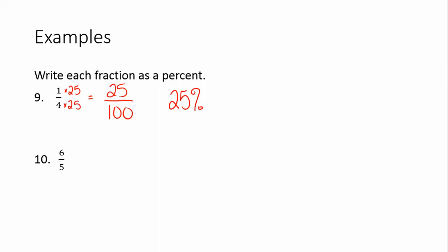Same with 6 over 5. What number do you have to multiply 5 by to get 100? And if you're not sure, you'll have to start checking on a calculator. You can take 100 and divide it by 5. That will give you the number you need to multiply by. But it is 20. So that gives us 120 out of 100. Or 120 percent. So when you're writing fractions as percents, you need to make your denominator 100. Then you also need to multiply your numerator by that same number. And then the numerator becomes your percentage.